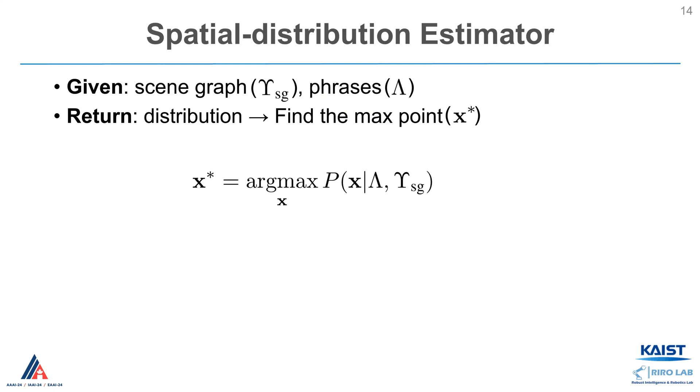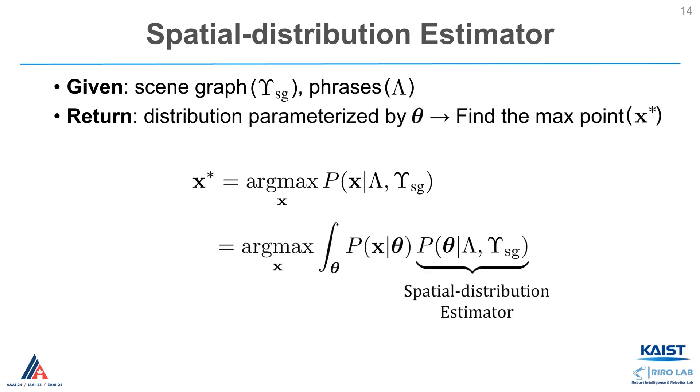We formulate this as an optimization problem. Given the scene graph, upsilon sg, and the instruction, lambda, we want to find the maximum probability point, x star. We reformulate this by introducing a distribution parameter, theta. Here, the term p theta given lambda, upsilon sg will be modeled through the spatial distribution estimator.